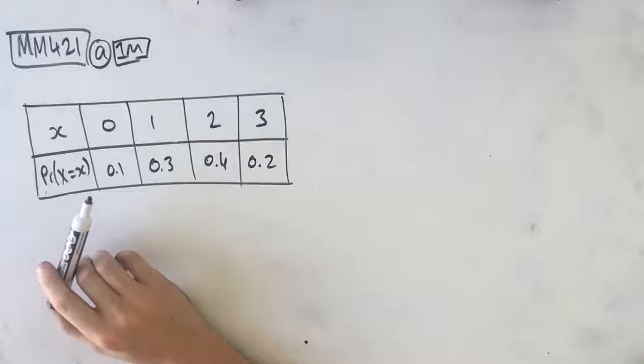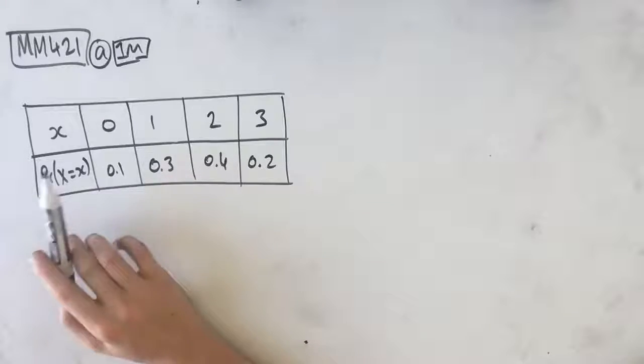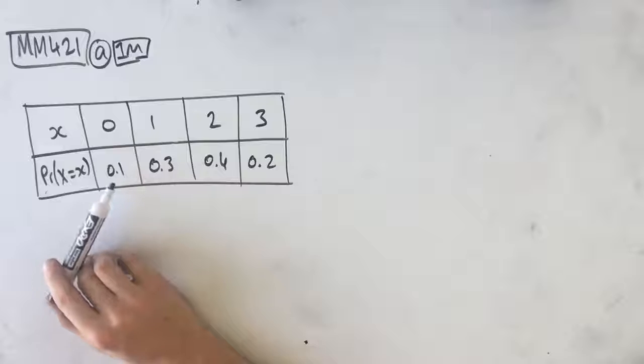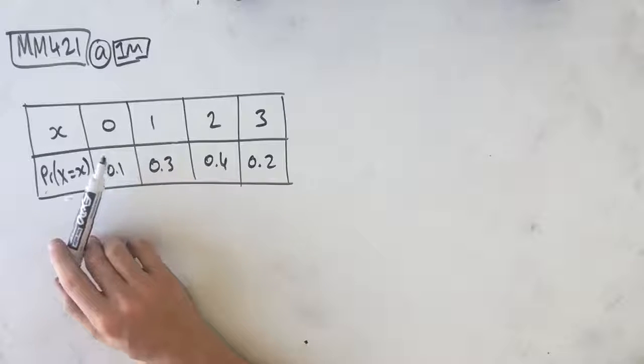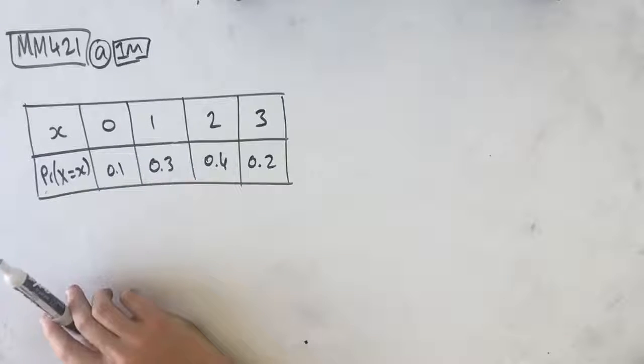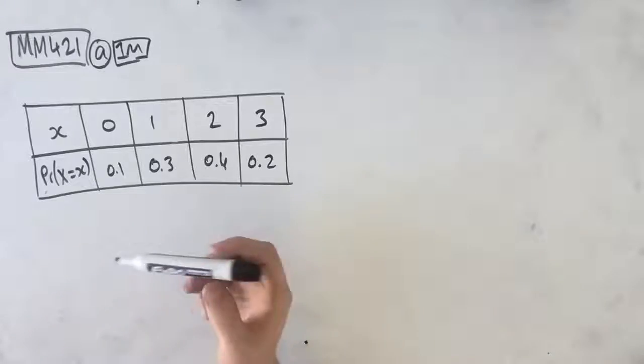So in this question, James works at a cafe and usually serves a few rude customers each day. The number X of rude customers per day is a random variable with probability distribution given by this table. How many rude customers can James expect to serve on any given day?